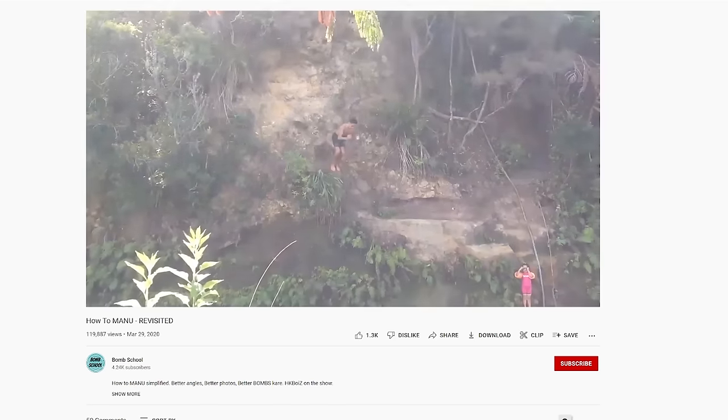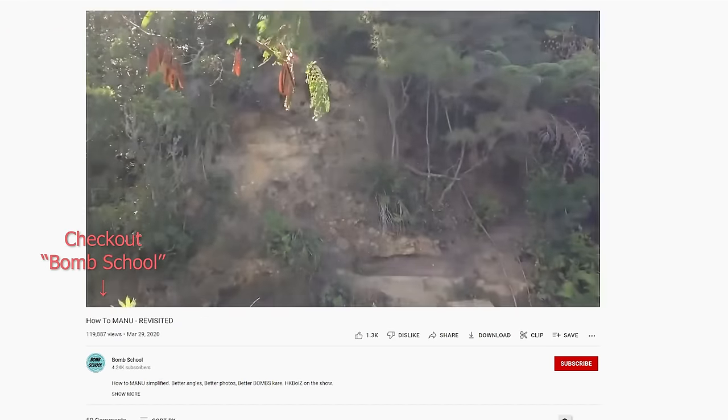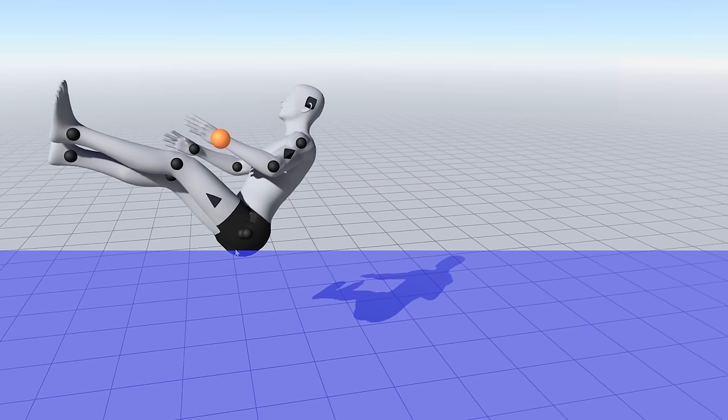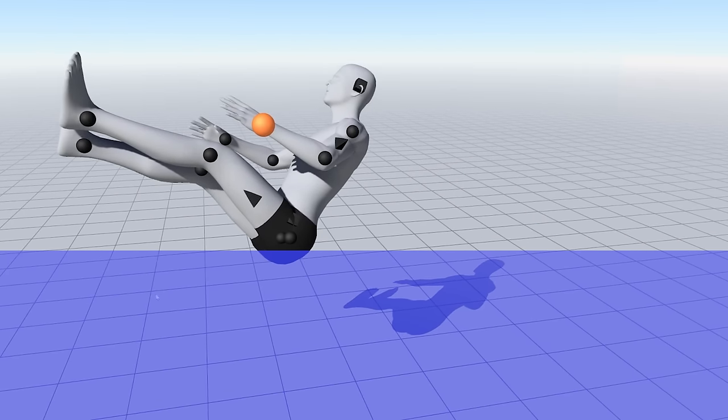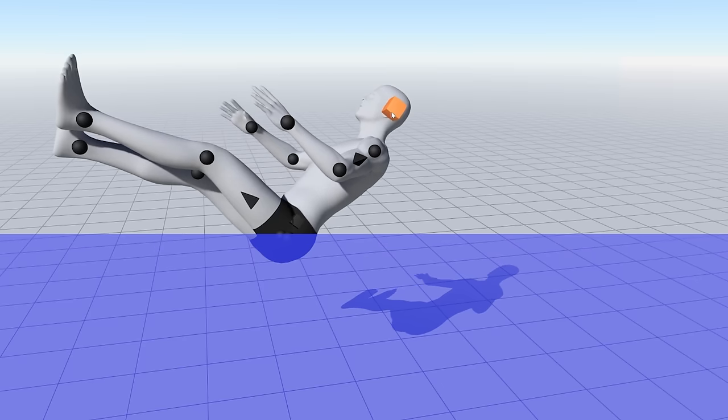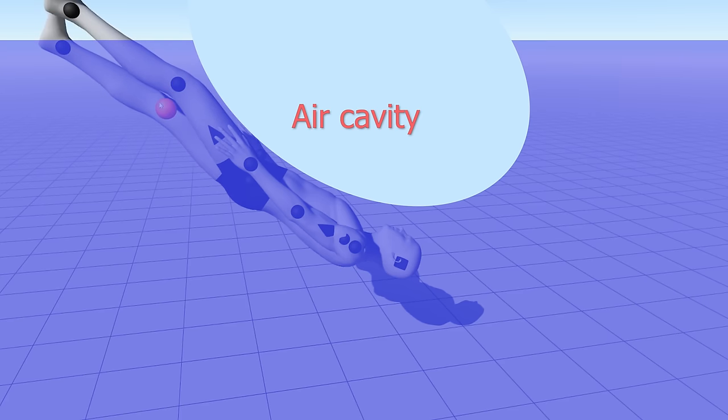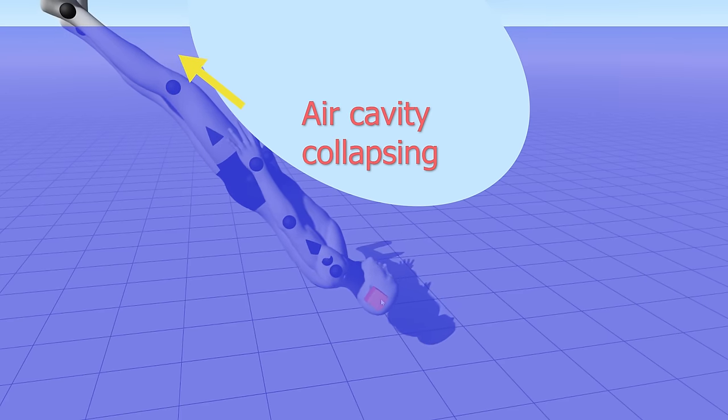To figure out how this is working, I checked out some instructional videos on how to Manu. The key is that right before you hit the water, your body's bent in this position. And then once you hit the water, you open your body up so that you end up almost completely upside down in the water. This sends a powerful spray of water up off your legs and body.